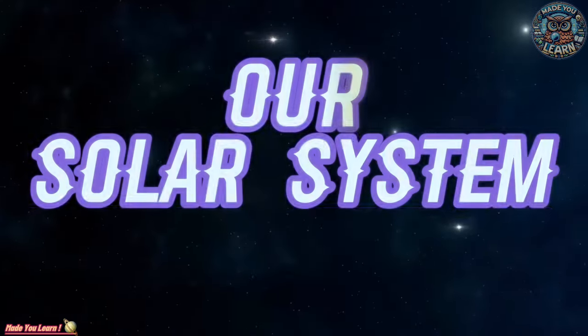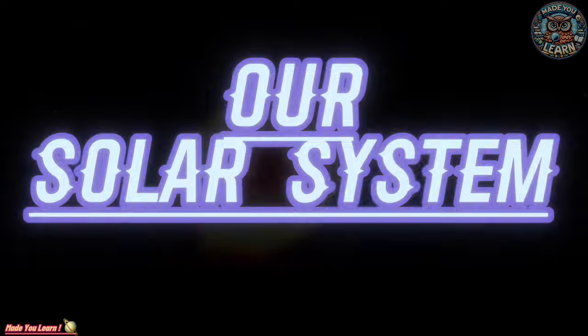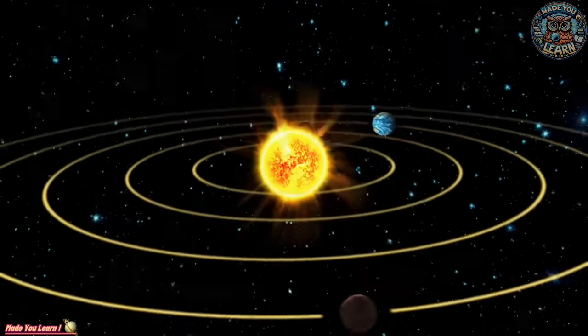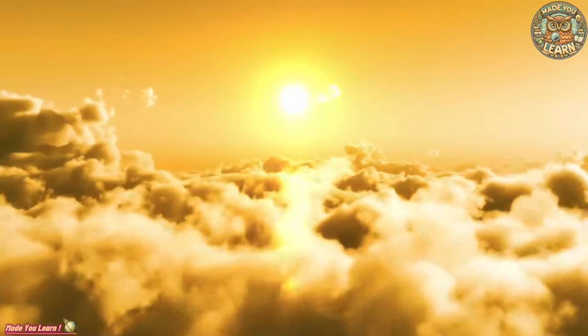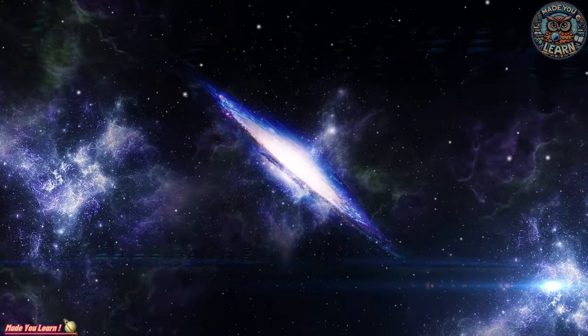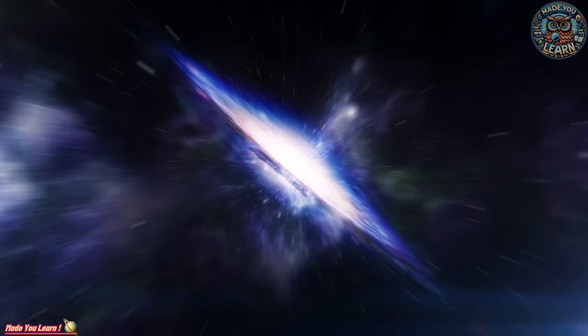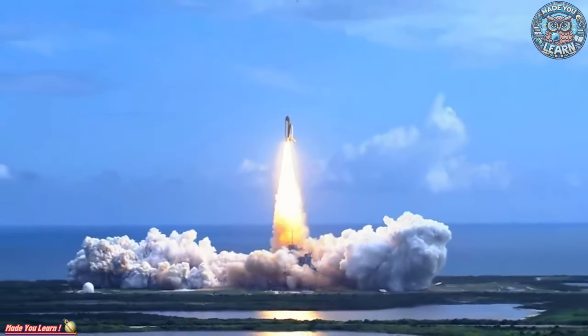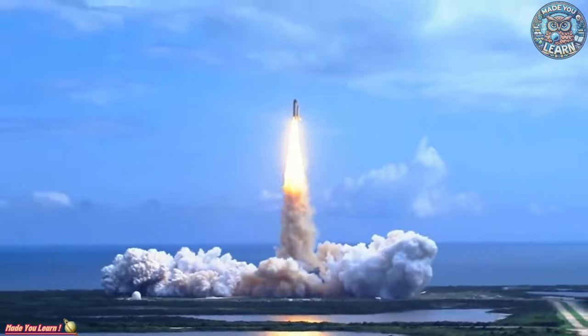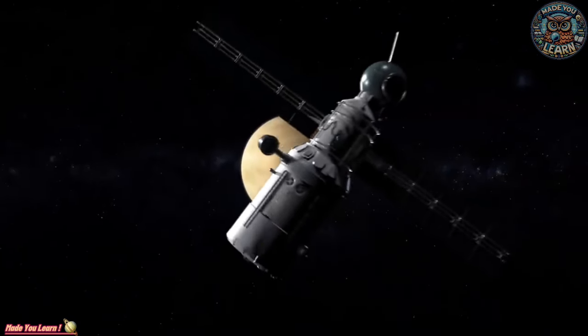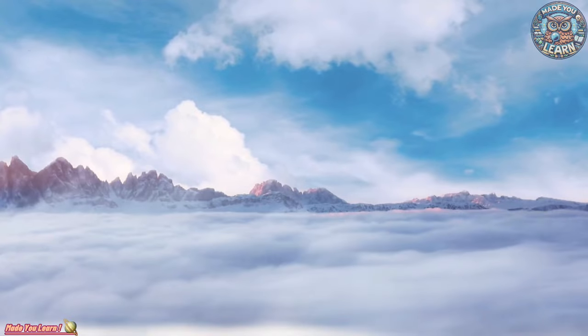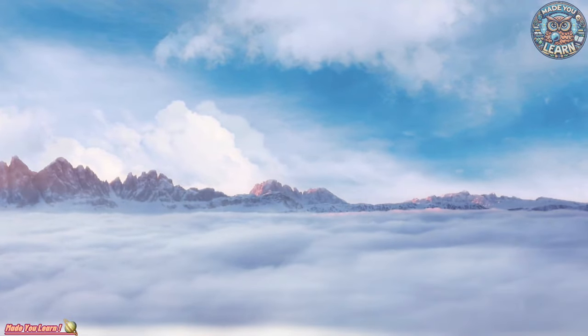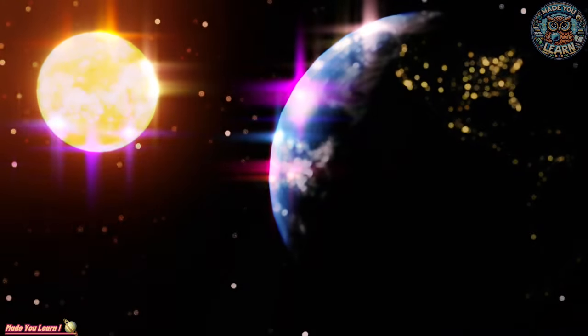Our solar system is a vast and intricate ensemble of celestial bodies. Our solar system orbits around a single, luminous star we know as the Sun. It's a cosmic ballet set on the grandest of stages, the Milky Way galaxy. This voyage through our solar system will illuminate the wonders and complexities of its members, from the fiery surface of the Sun to the icy realms of the outer planets and beyond.